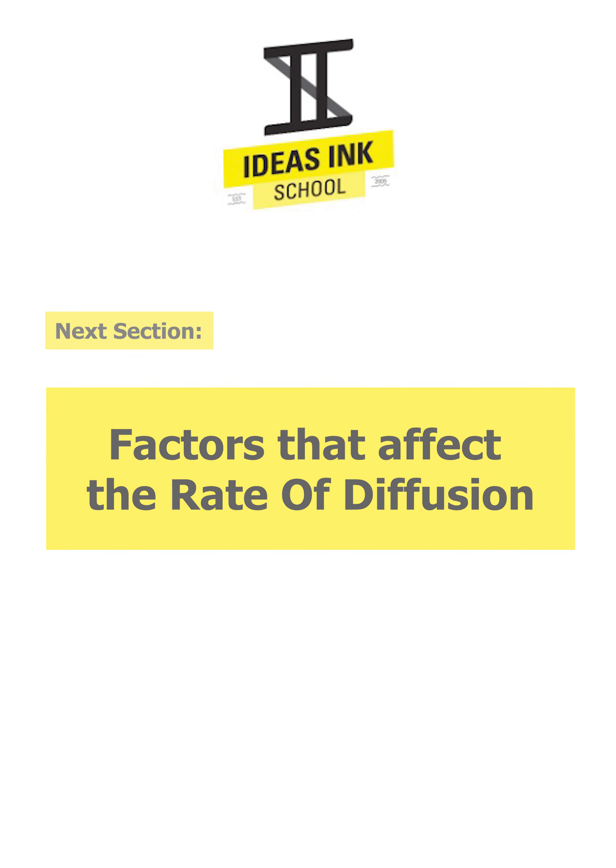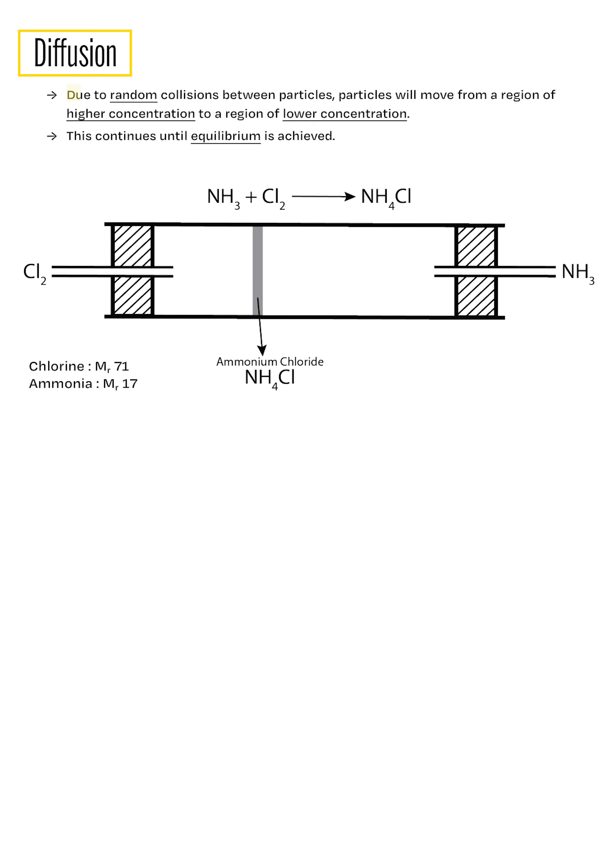Let's begin by recalling the definition of diffusion. Due to the random collisions between particles, there will be a net movement of particles from a region of higher concentration to a region of lower concentration. And this process will continue till equilibrium is achieved.